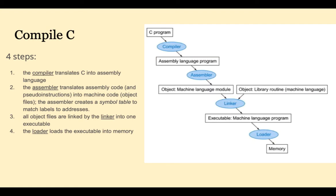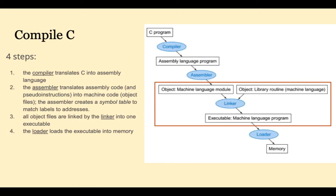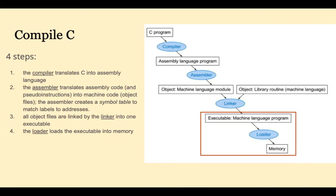All object files, which may consist of user files as well as system files, are linked together by the linker into one executable. This executable stays on disk until we're ready to run it. When we're ready to run it, the loader loads the executable into memory. Note that modern compilers can also compile directly from a higher-level language to machine code without going through the assembly language step.